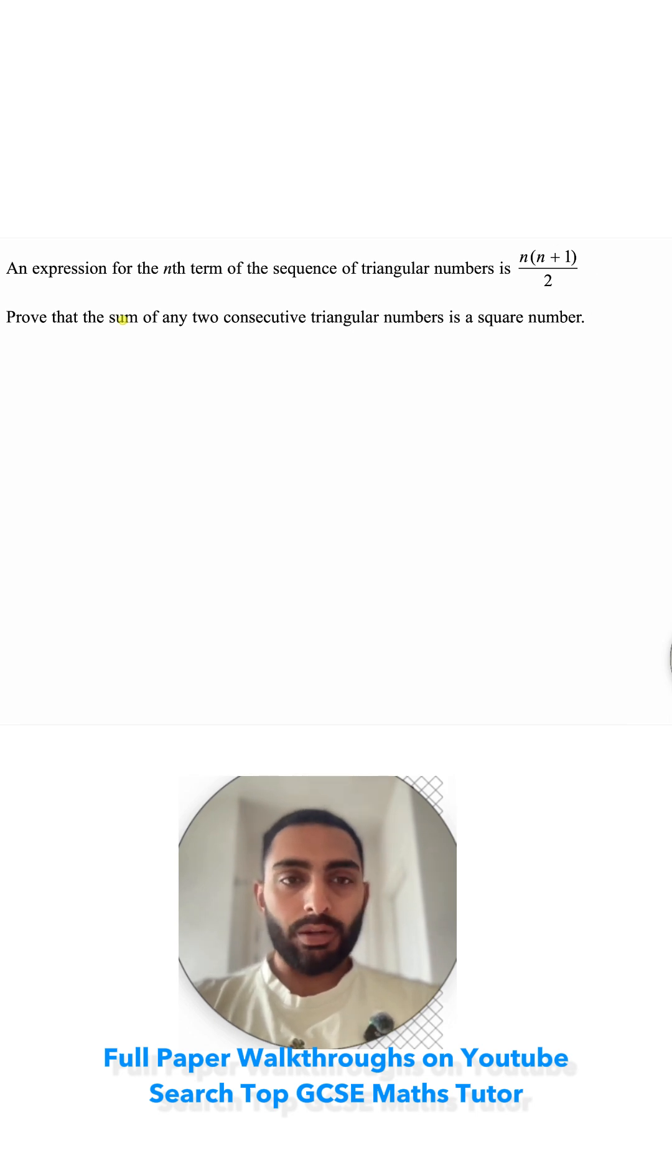We're trying to prove that the sum, which just means adding them together, of two consecutive numbers—consecutive just means numbers next to each other—triangular just means the numbers that we get when we put something into here, and square number is just a number that's been multiplied by itself, so it's going to have a squared in it at the end.